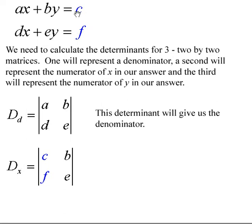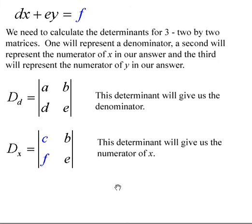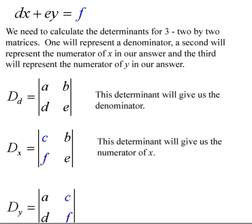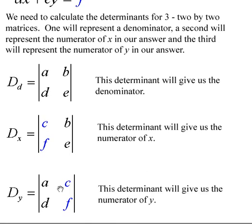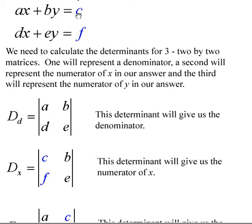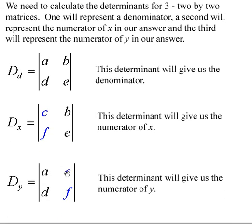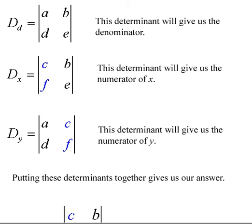Notice I've color-coded the constants in blue. When we're looking for the numerator of x, we take the x coefficients — which were a and d — and replace them with the constants c and f. We're going to continue that pattern as we look for the numerator of y. For the numerator of y, we take the y coefficients — b and e — and replace them with the constants c and f.